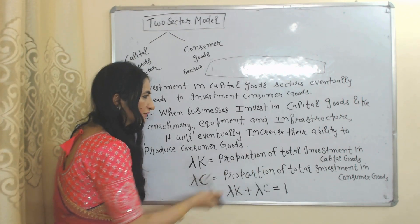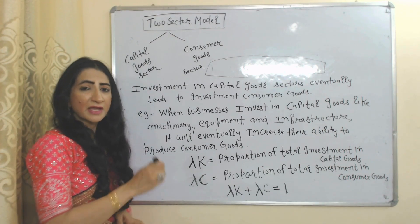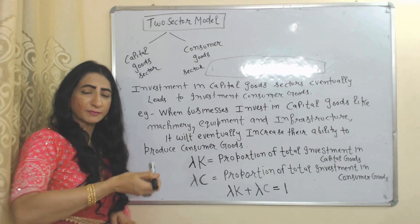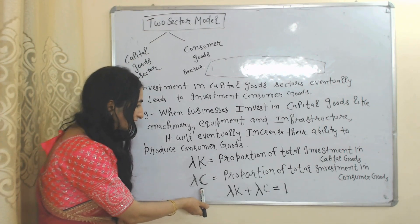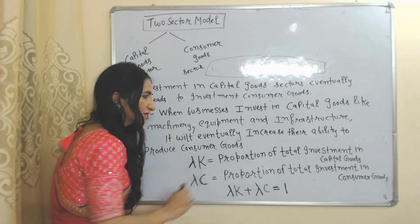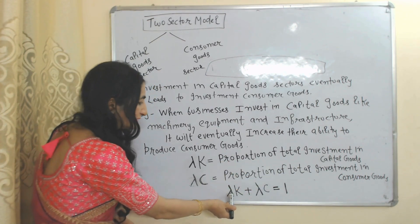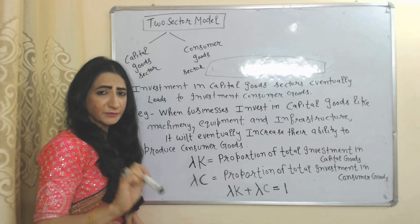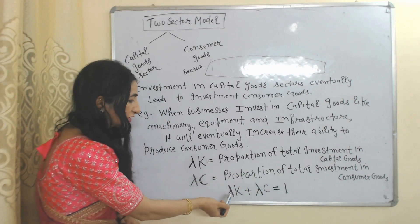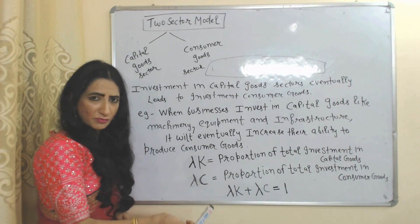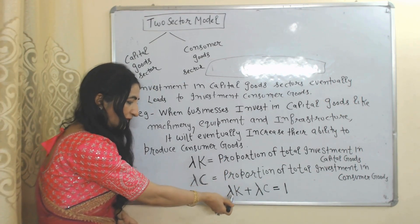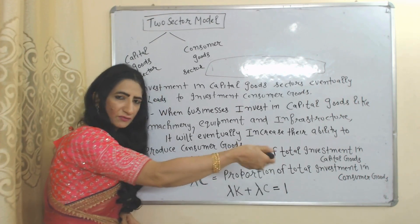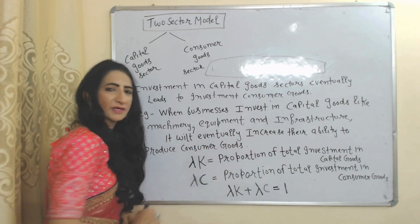For example, when businesses invest in capital goods like machinery, equipment, and infrastructure, it eventually increases their ability to produce more consumer goods. That's why this model mainly focuses on investment in capital goods. Here, lambda k means the proportion of total investment in capital goods — how much of total investment businesses are using for purchasing machines, tools, and equipment. Lambda k plus lambda c equals one. If you have one rupee, you will invest either in capital goods or in consumer goods. For example, if 70% goes to capital goods and 30% to consumer goods, it equals one.